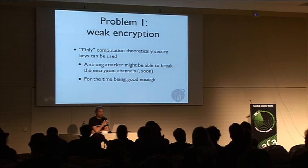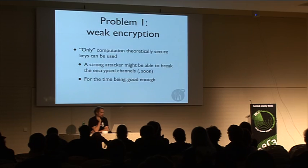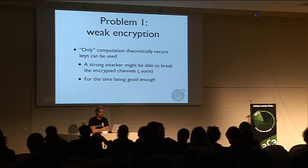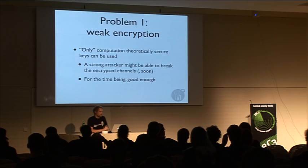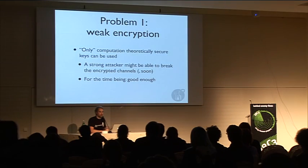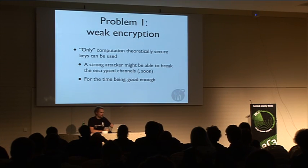What problems do we have? I'll start with the weakest problem compared to DC networks: weak encryption, as it is only computationally theoretically secure. A strong attacker might be able to break the encrypted channels and unveil the identities of users. This is not a current problem, but as computers grow stronger, it might become one soon. DC offers the possibility to have better, information-theoretically secure keys.